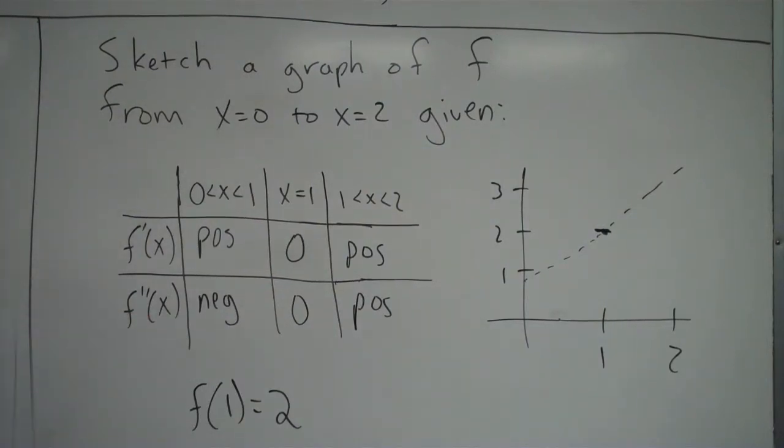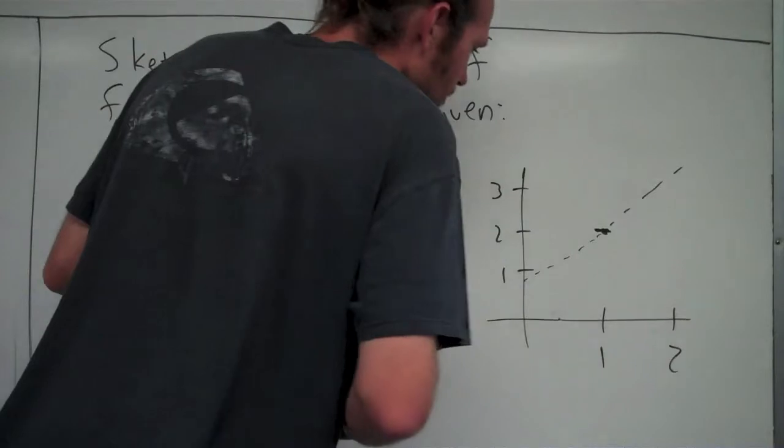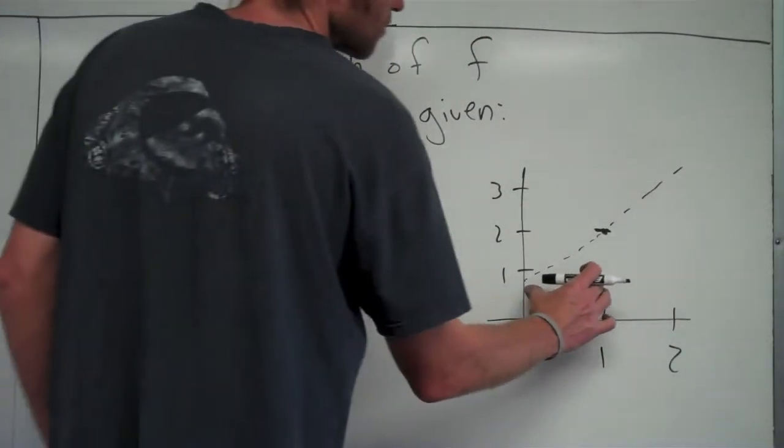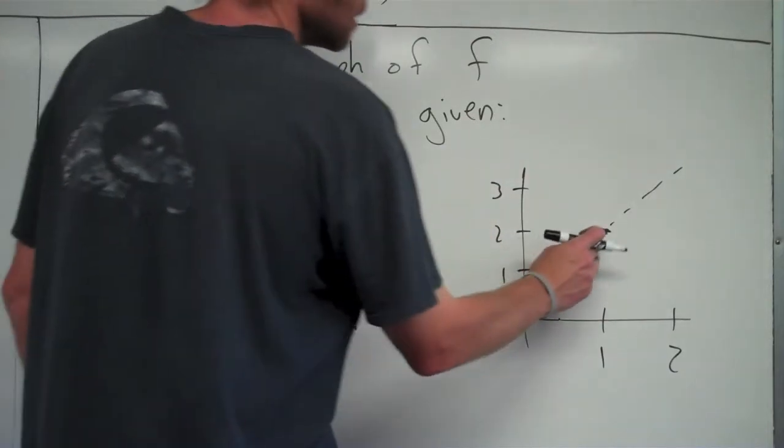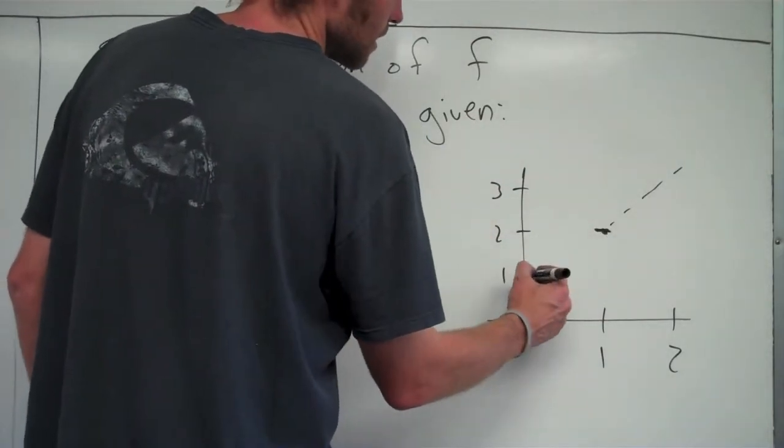So let's go down to f double prime. It says from 0 to 1, f double prime is negative. That means that the graph is concave down from 0 to 1. Okay, so I have a concave down graph from 0 to 1. So a graph that's increasing, but is downward facing. So a graph like that would look something like this.